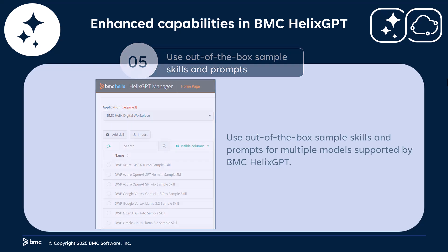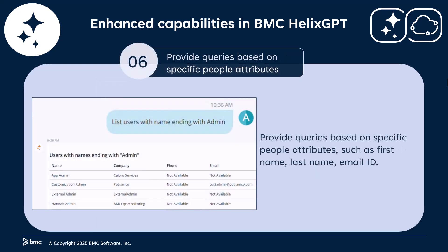Use Employee Navigator to find targeted answers related to specific people attributes, such as first name, last name, and email ID.